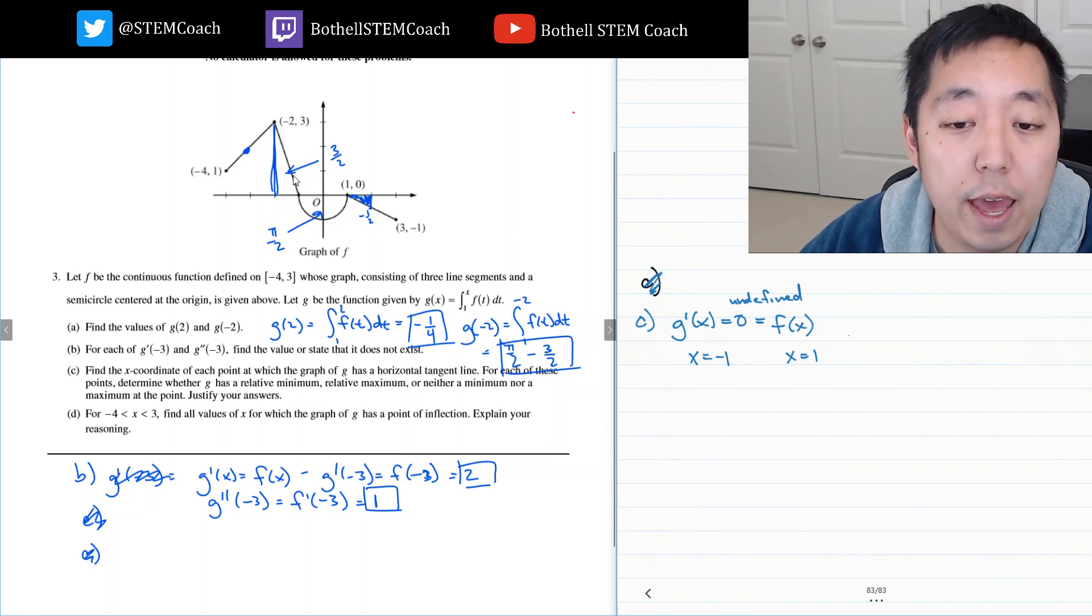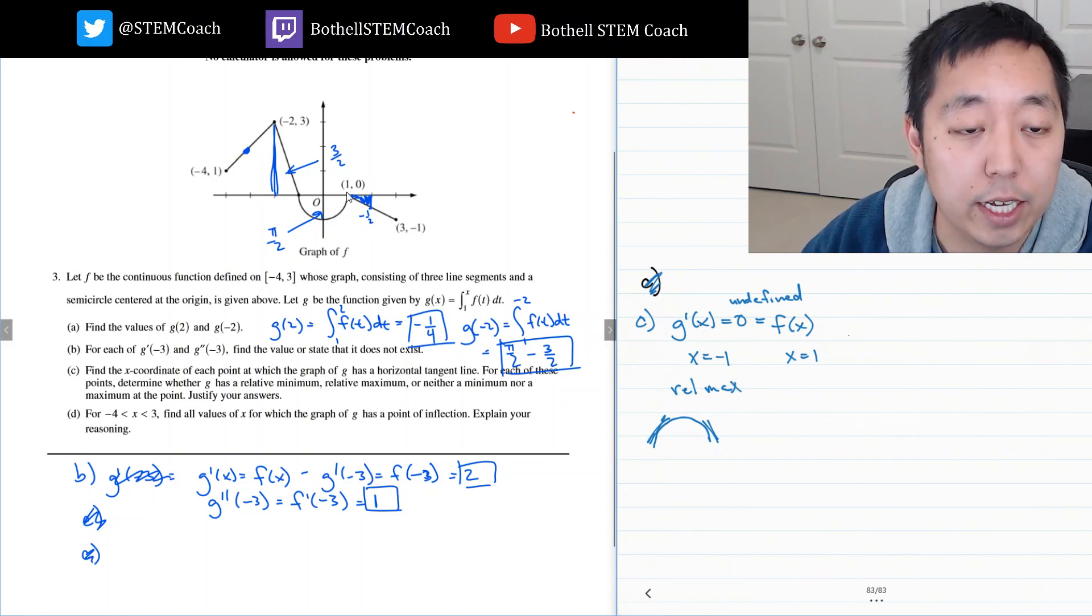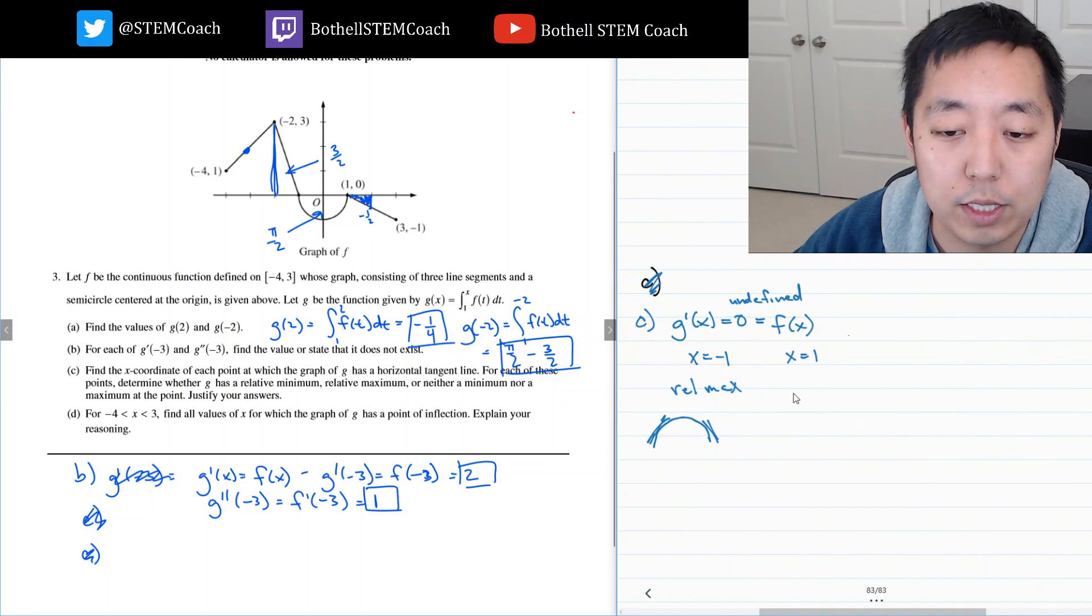Now, at those points, F of x or G prime of x is going from positive to negative. So, by the first derivative test, that means the slopes are positive to the left and negative to the right. This is a relative max. And x equals one, you see the slopes stay negative the whole time. They stay negative because it's below the x axis. So, F is negative here and F is negative here by being below the x axis.